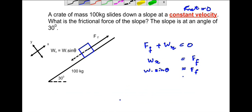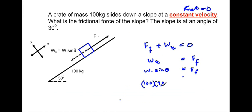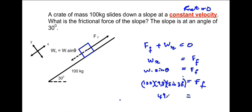We are working out the frictional force on the slope. The weight will be 100 kg, g is 9.8, and it will be sine of the angle theta — in this case, 30 degrees — which equals the frictional force. Working that out: 100 times 9.8 times sine 30 gives us 490 newtons. So that is the answer for the frictional force on the slope.